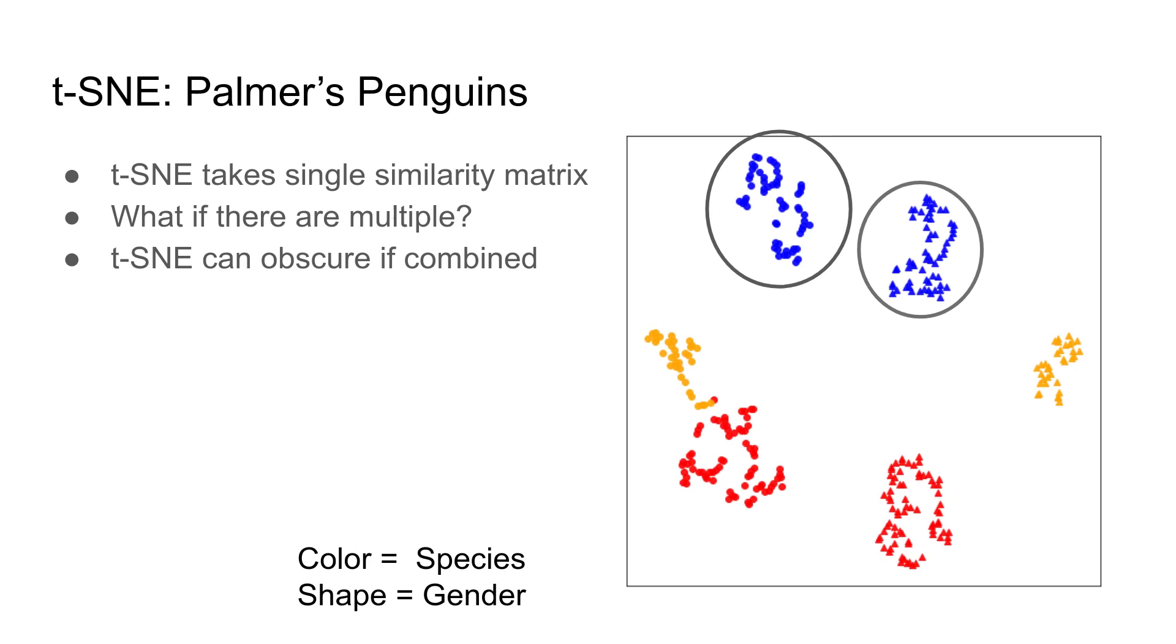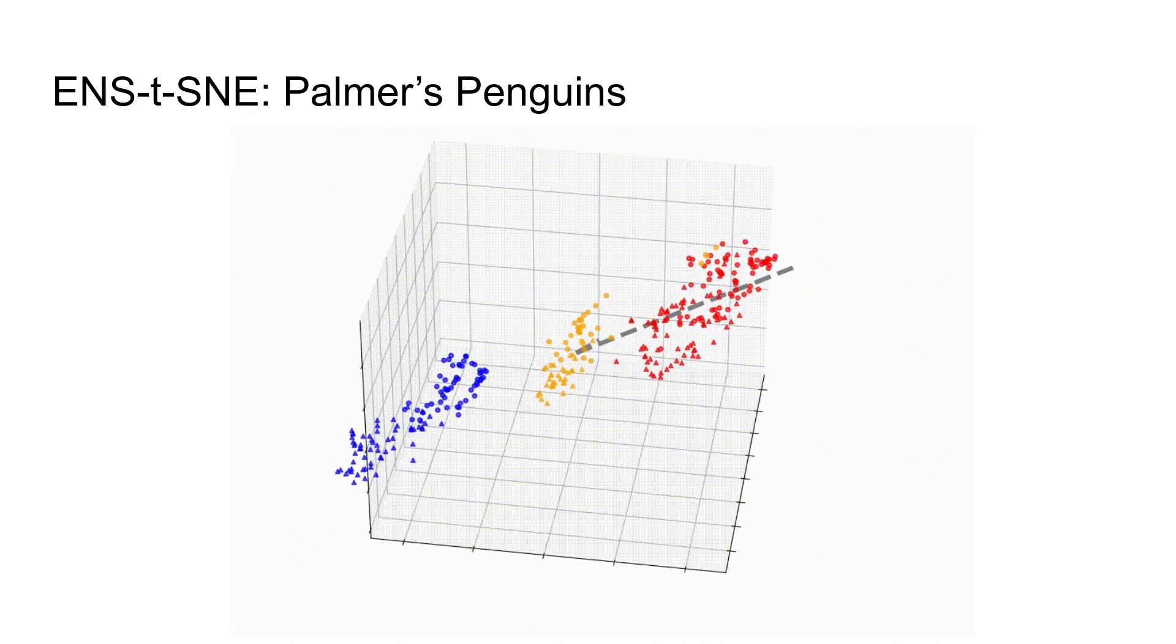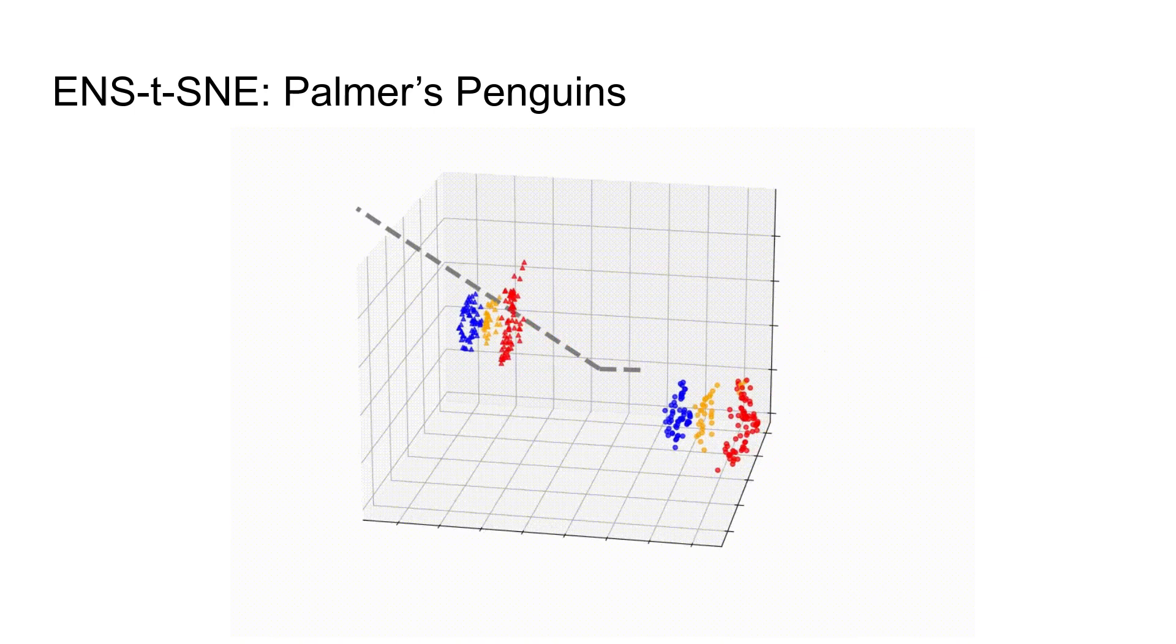We can get more information by using ENS-t-SNE. We see the same six clusters in our ENS-t-SNE three-dimensional plot, but they have been positioned carefully in the space so that in two separate projections, a different clustering is shown.